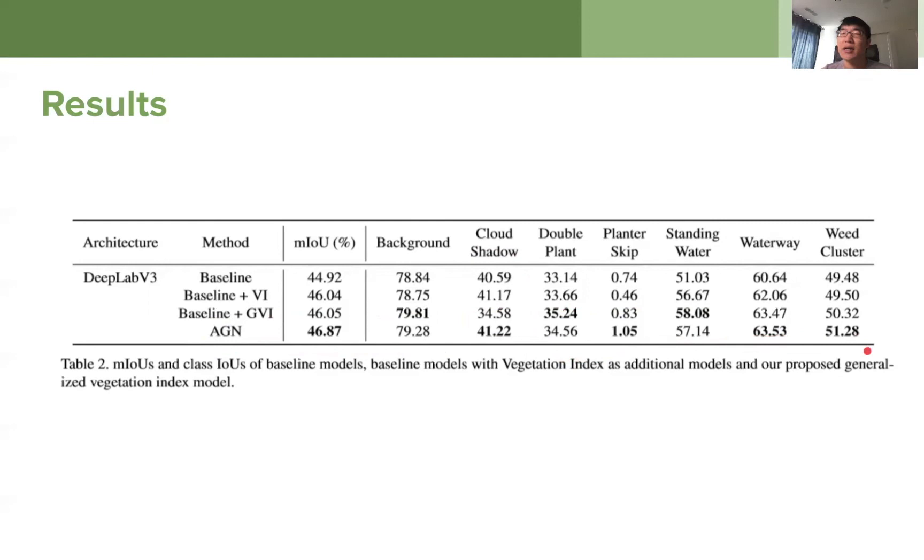Okay. So in conclusion, we want to say like the generalized vegetation index, we have seen that enhance the model performance and our adaptive group normalization further stabilize the training performance. It's still, there's still a lot of work to do, because we are just doing this, we are implementing the experiments. We are running the experiments over the agricultural vision dataset only. There are several vegetation related detection classes in this dataset, but we would like to see the result over a more broader list of tasks. And we only experiment with that certain type of architecture, which is DeepLab V3 plus EfficientNet in this case. And I think that concludes my presentation. And thank you all.